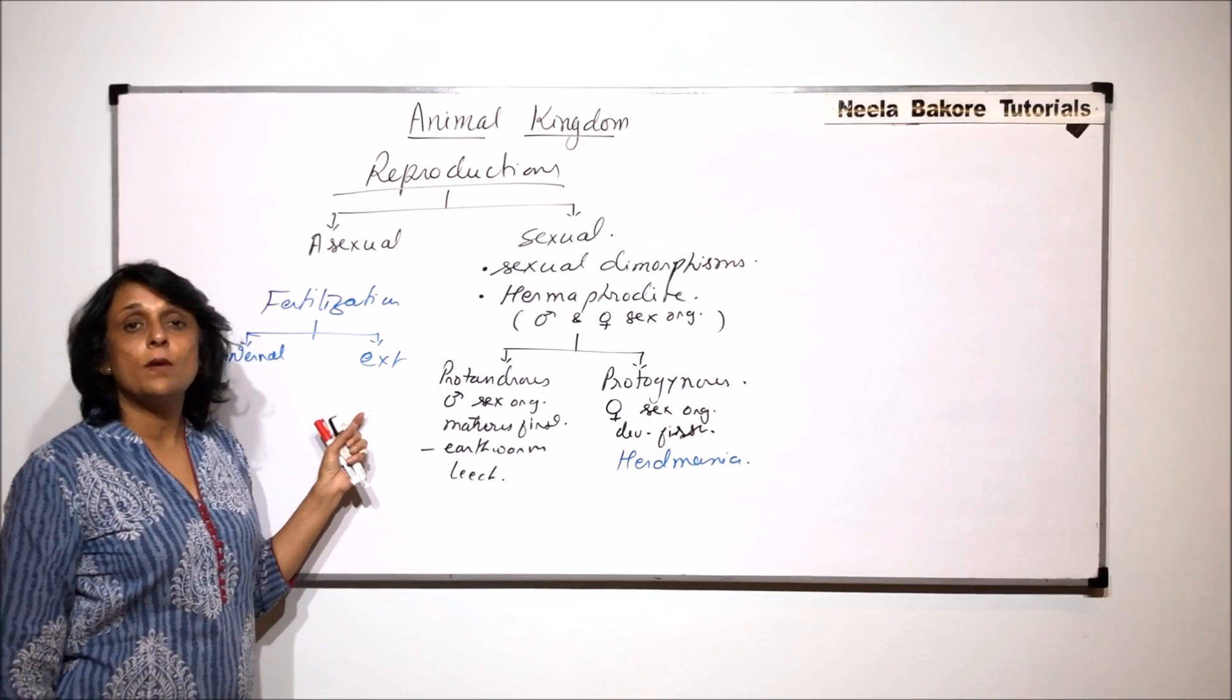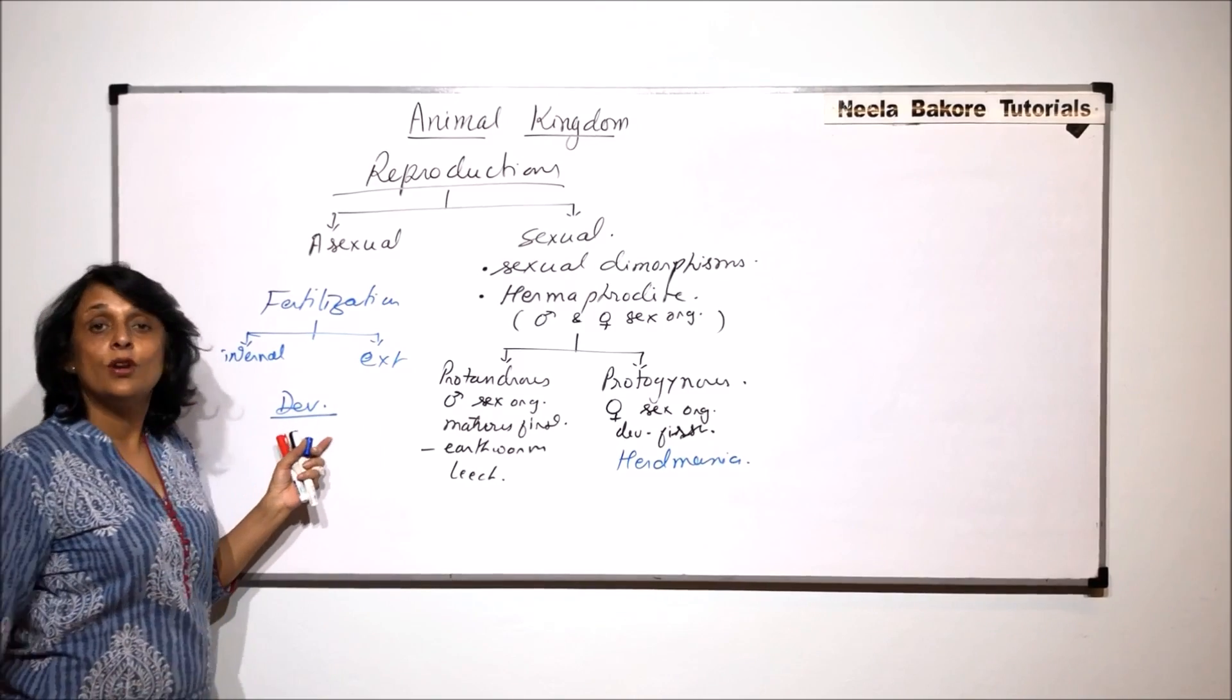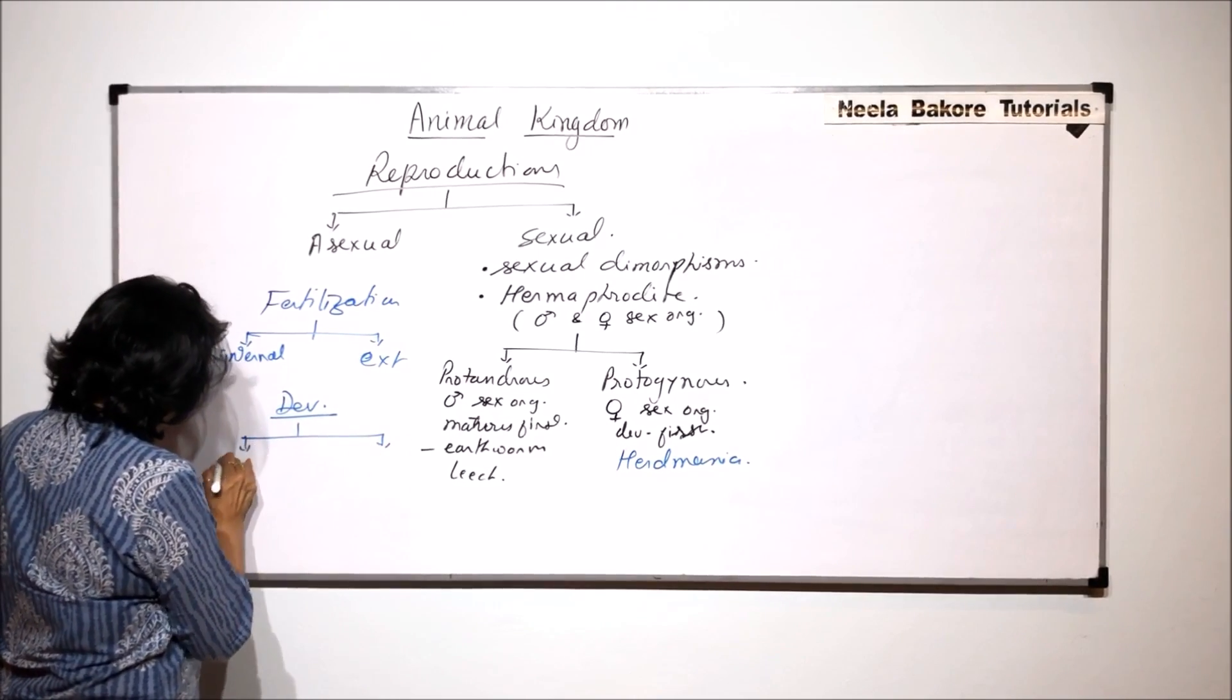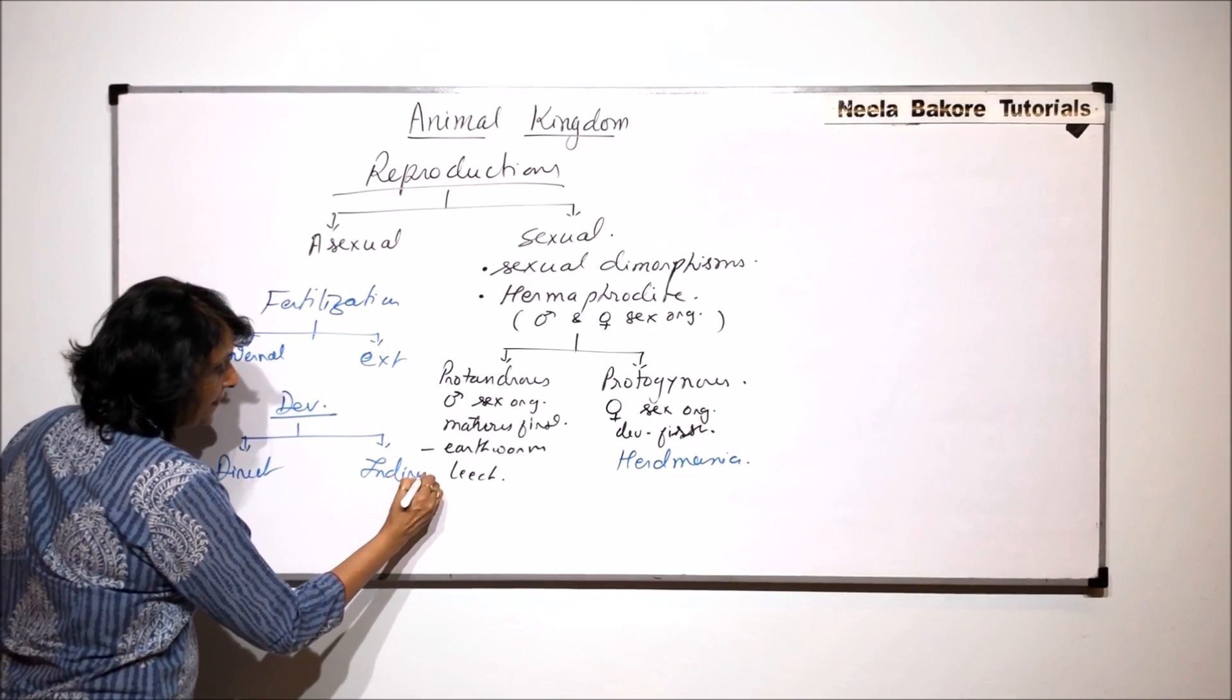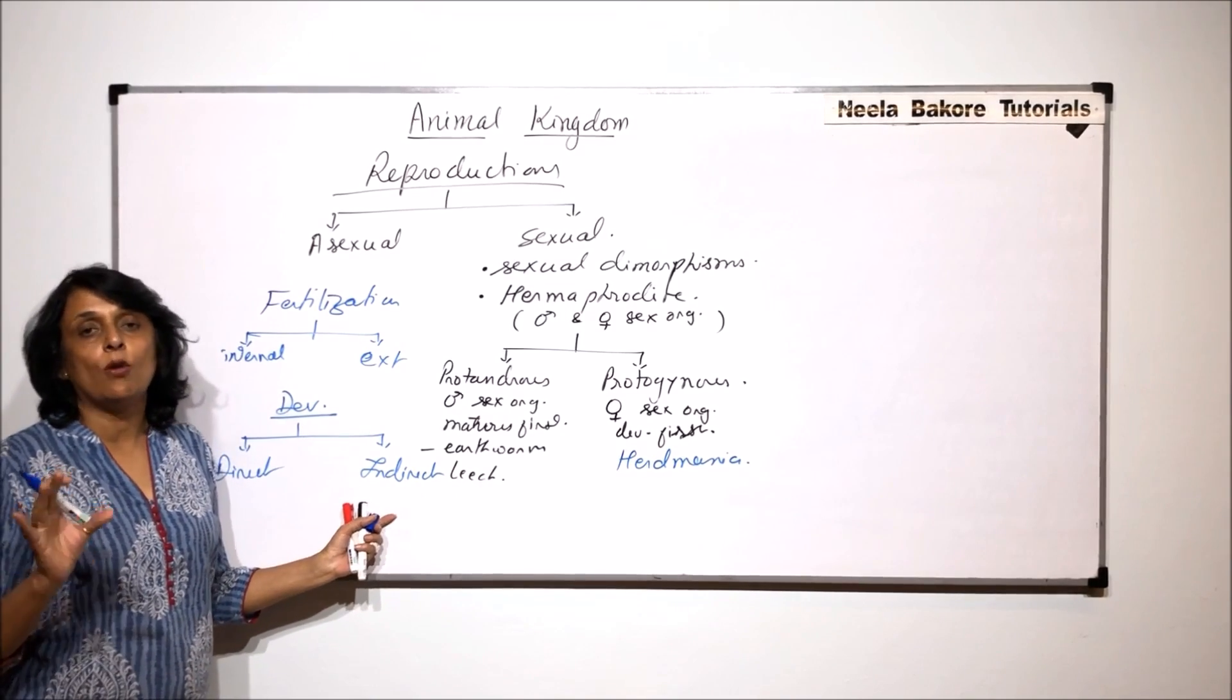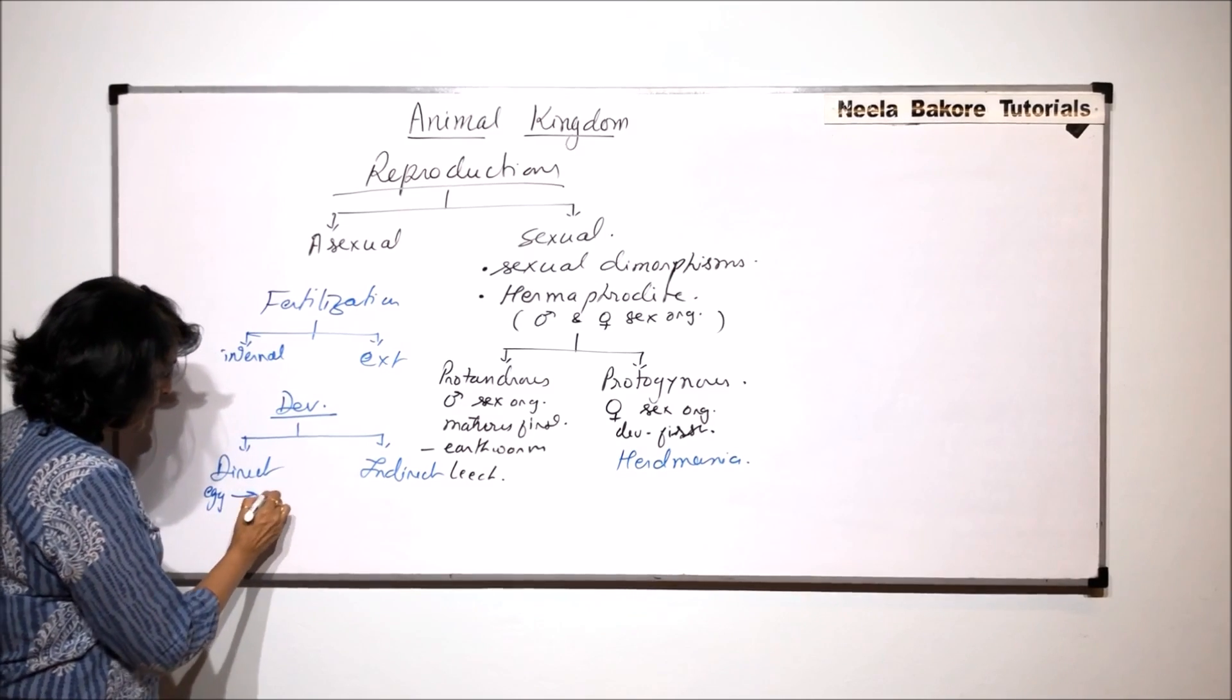Now when we talk about the development, when the embryo develops, the development can also be direct or indirect. Direct means what is formed from the egg is the organism. So egg directly produces the young.